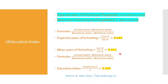Next, we calculate the Education Index. From UNDP.org, the expected years of schooling for Bangladesh is 11.6 years in 2019, and the mean years of schooling is 6.2 years in 2019. There are two components of Education Index: expected years of schooling, which ranges from 0 to 18 years, and mean years of schooling, which ranges from 0 to 15 years.